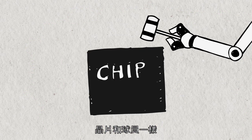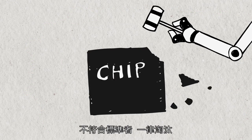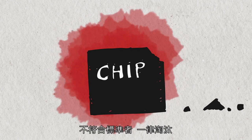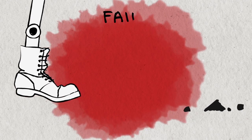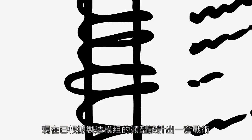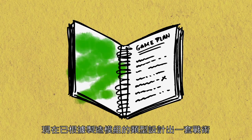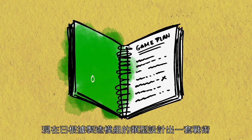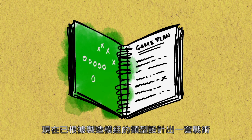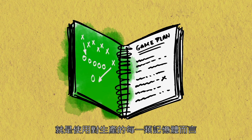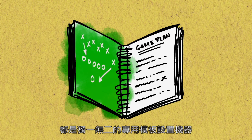Any time a player doesn't meet the standards, it's goodbye Mr. Chip. Based on the type of module being manufactured, the game plan is devised, which means the machine is programmed using templates that are unique to each kind of memory produced.